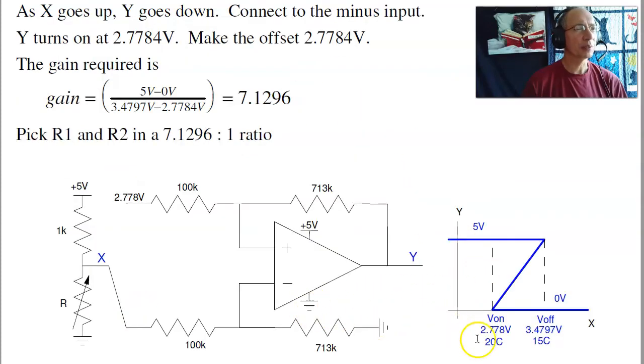I'll now use a Schmidt trigger. So this is where I turn on at 2.77, this is where I turn off at 3.47. When x is large, the output is low, so I connect to the minus input. I turn on at 2.77 volts, so that's my offset. And the slope, output changes by 5 volts as the input changes by about 0.7 volts. Gives a gain of 7. Pick this to be a 7 to 1 ratio.